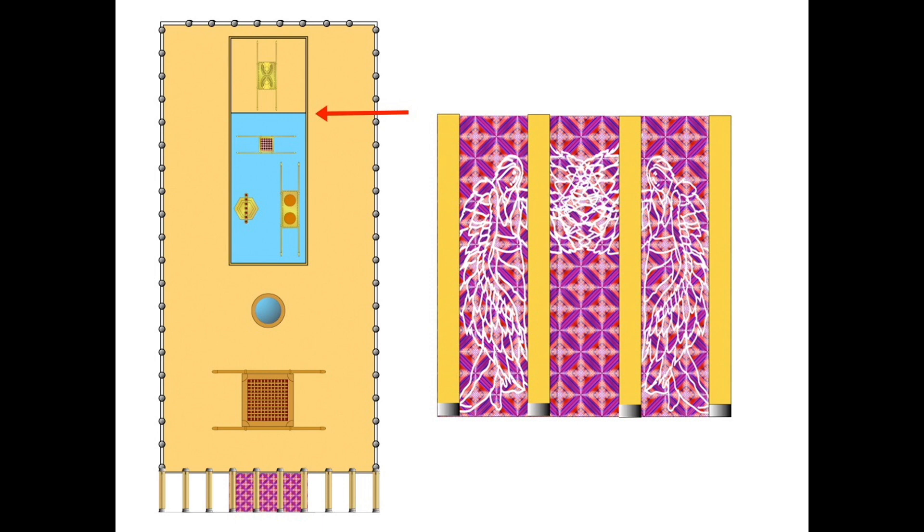I trust that this helps us to understand why we refer to the atonement money or the sockets of silver as the redemption price that was paid for each Israelite coming out of Egypt and going into the promised land.